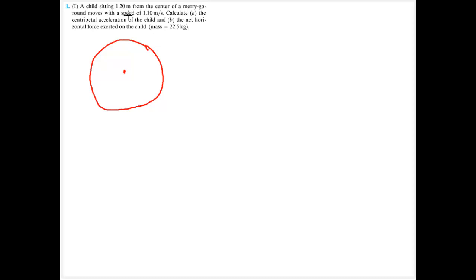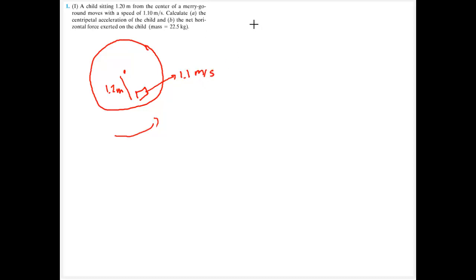Some additional problems for Chapter 5. Here I have a merry-go-round rotating around its center. A child is sitting a distance of 1.2 meters from the center, and she has a linear velocity of 1.1 meters per second. I'm asked for her centripetal acceleration and the force, given her mass.